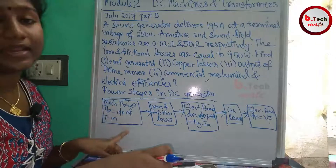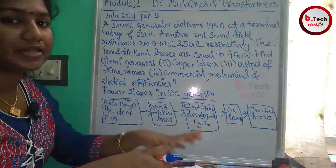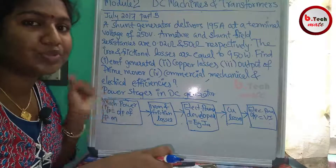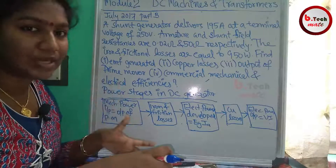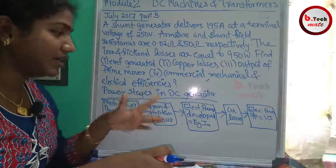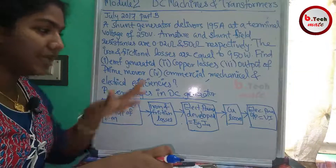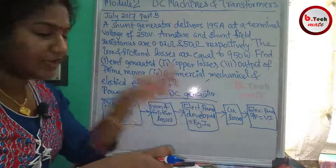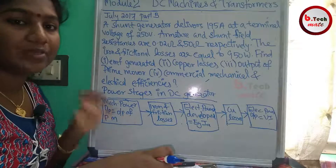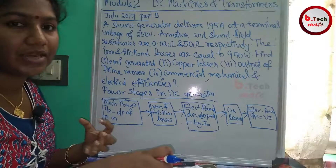We need to convert the mechanical input to electrical output. In the last video, I was discussing electrical and mechanical. By mistake, the generator converts mechanical to electrical. So we have mechanical input power — that means we have a prime mover. The generator has a prime mover.